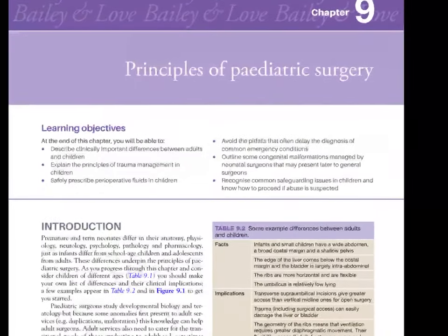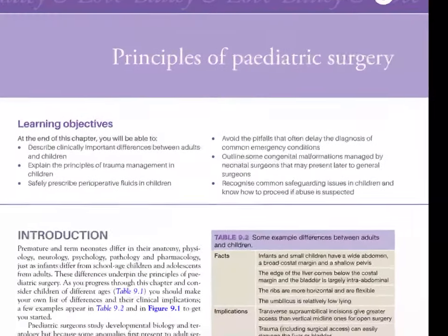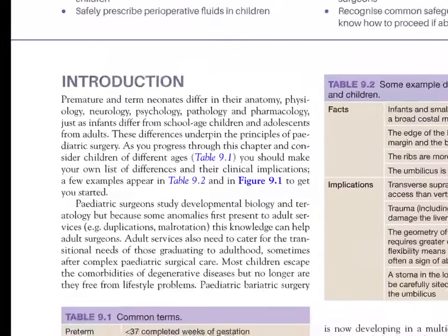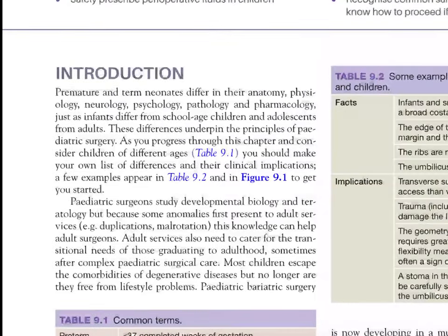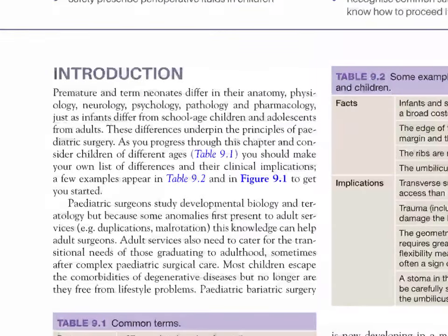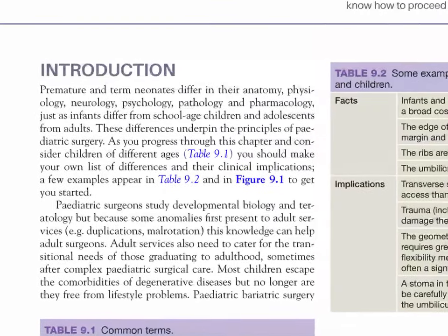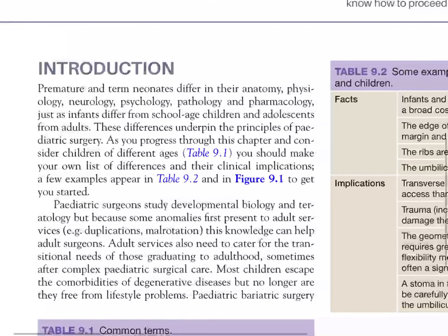Let's start with Chapter 9, Principles of Pediatric Surgery Introduction. Premature and term neonates differ in their anatomy, physiology, neurology, psychology, pathology and pharmacology. Just as infants differ from school age children and adolescents from adults, these differences underpin the principles of pediatric surgery.